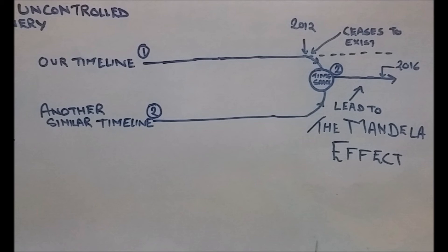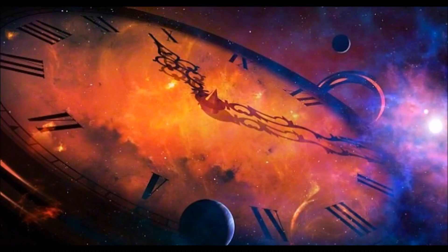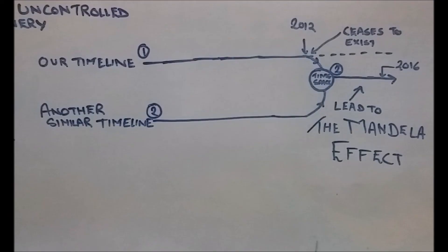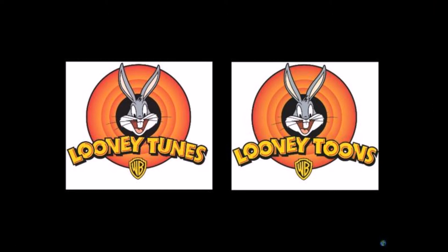Now what happened is both the timelines were going on their own path since time is linear and it can move only forward, or it should be. So in 2012, or whenever they successfully made this collision happen, our timeline ceased to exist, or timeline two ceased to exist.